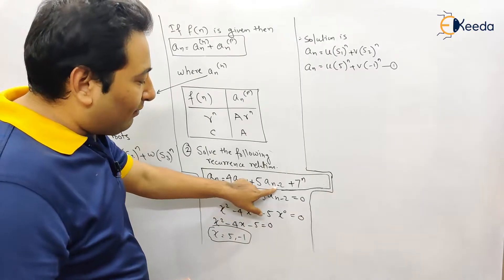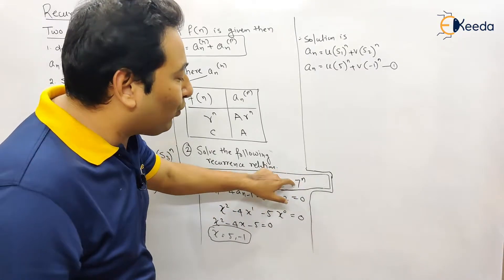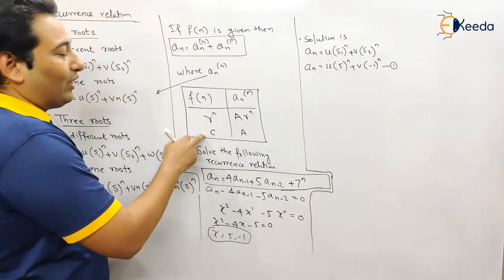a_n, n-1, n-2. So whatever without a_n, whatever you are left with, is your f of n. So it can be of these two categories.